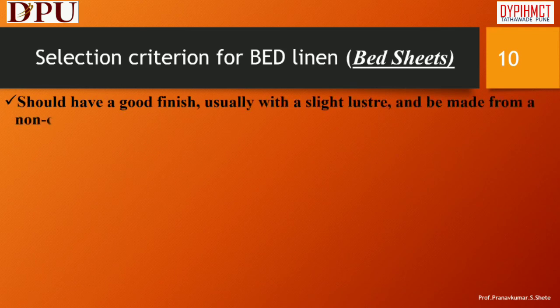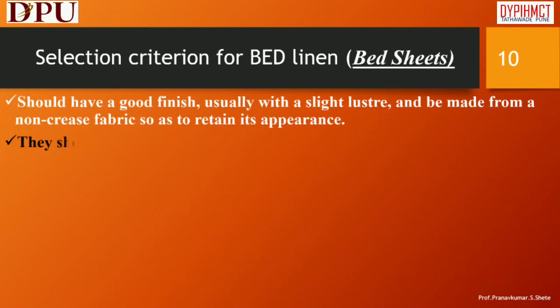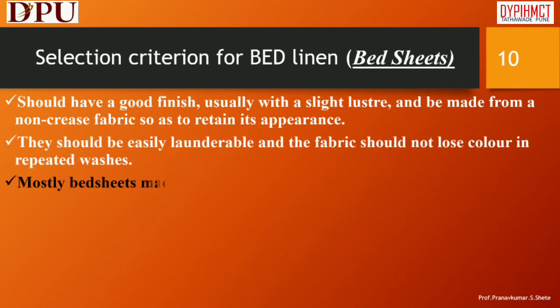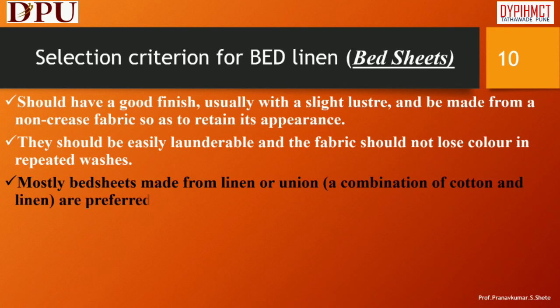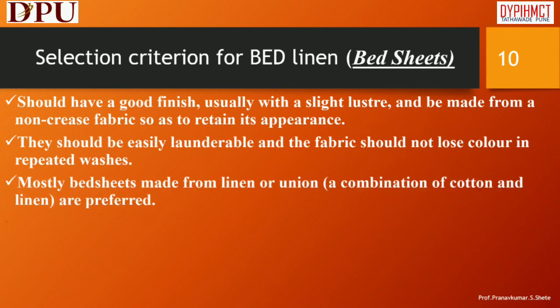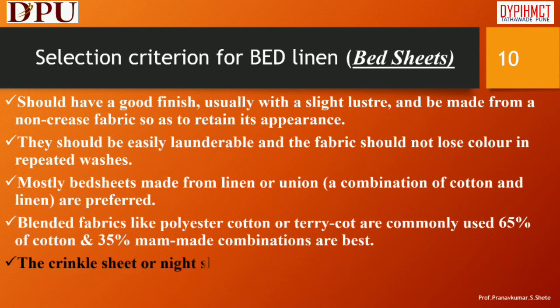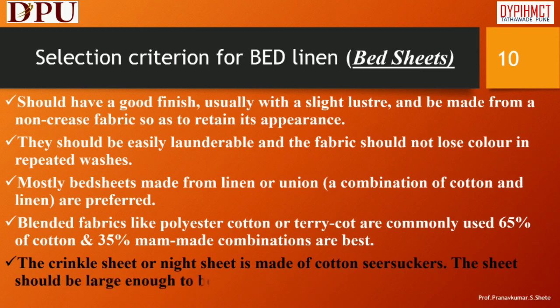Selection criterion for bed linen — Bed Sheets: Should have a good finish, usually with a slight luster, and be made from a non-crease fabric so as to retain its appearance. They should be easily launderable and the fabric should not lose color in repeated washes. Mostly bed sheets made from linen or union, a combination of cotton and linen, are preferred. Blended fabrics like polyester cotton or terricot are commonly used; 65% cotton and 35% man-made combinations are best. The crinkle sheet or night sheet is made of cotton seersucker. The sheet should be large enough to be tucked in securely around the mattress.